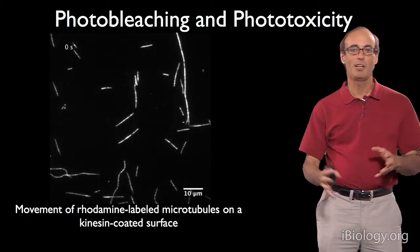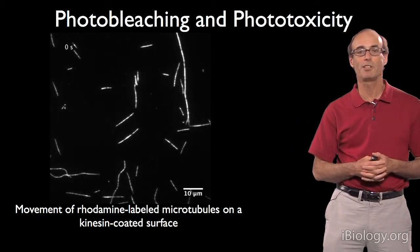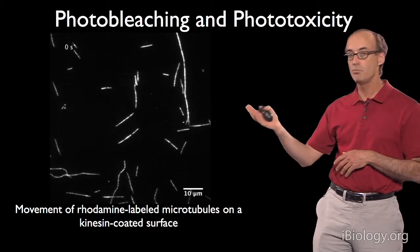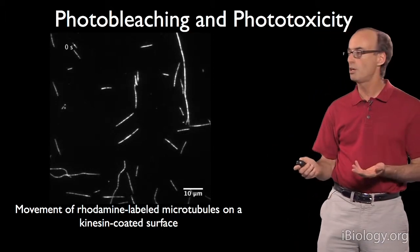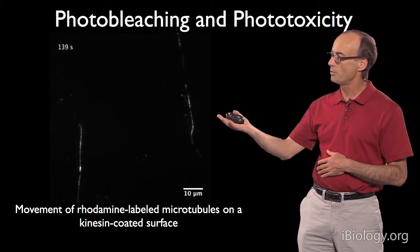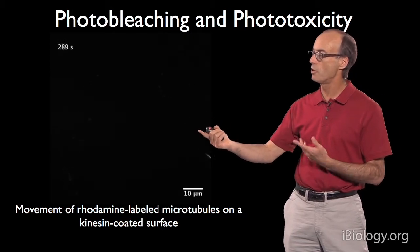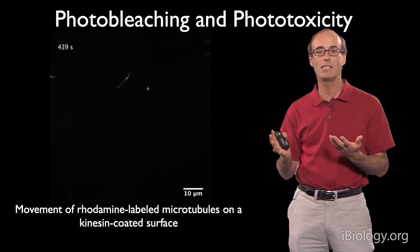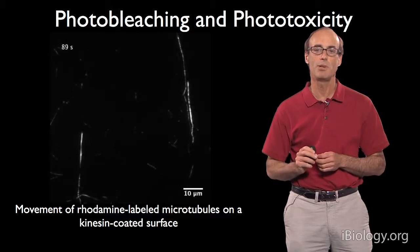Fluorescence microscopy is great, but two of the evil side effects that one often has to manage are photobleaching and phototoxicity. These are illustrated in this movie, where you're watching rhodamine-labeled microtubules moving along a kinesin-coated surface. Over time of illumination, the fluorescence signal begins to get dimmer — that's photobleaching. These microtubules have also become fragmented into many small pieces, and this is phototoxicity, because the illumination is actually destroying and breaking up these microtubules.